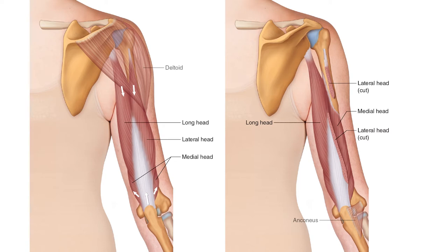In a superficial view we cannot see very much of the medial head, although it is peeking out on the medial side of the distal arm and also peeking out on the lateral side of the distal arm.